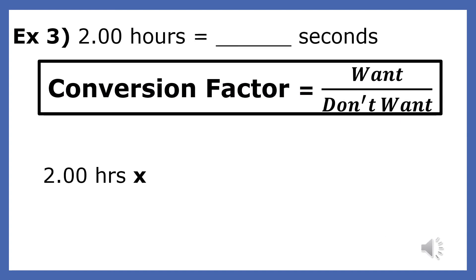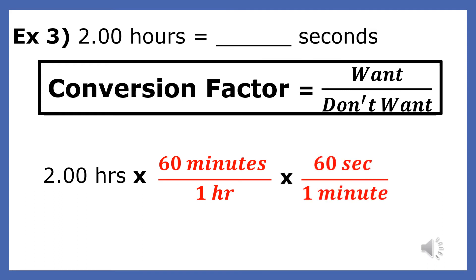Example 3. Sometimes unit conversions require two conversion factors. In this example, I will convert two hours into the standard unit of seconds. The first conversion factor changes hours into minutes and the second changes minutes to seconds. The variable we don't want is in the denominator of both conversion factors. Since the original time has three significant figures or digits, the answer should also have three significant digits.